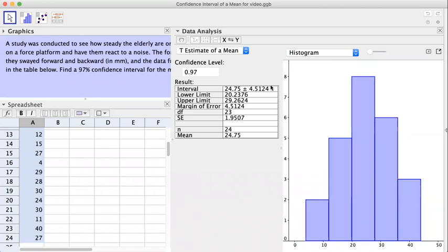That's the margin of error right here. So if you take the mean and you minus the margin of error, you have the lower limit. And you plus the margin of error, then you have the upper limit.